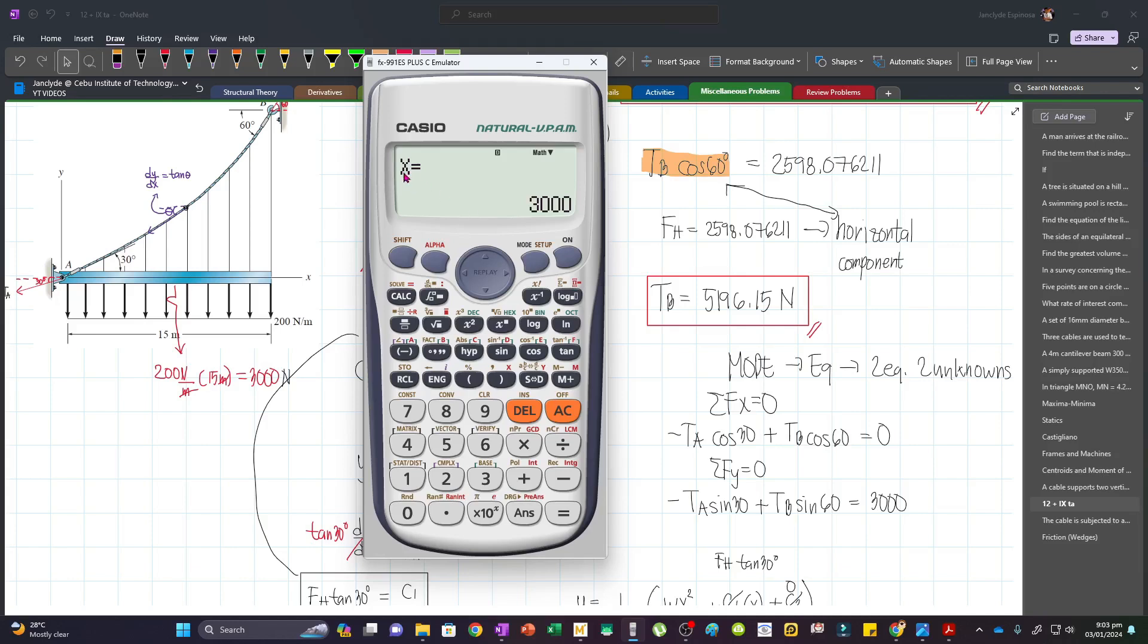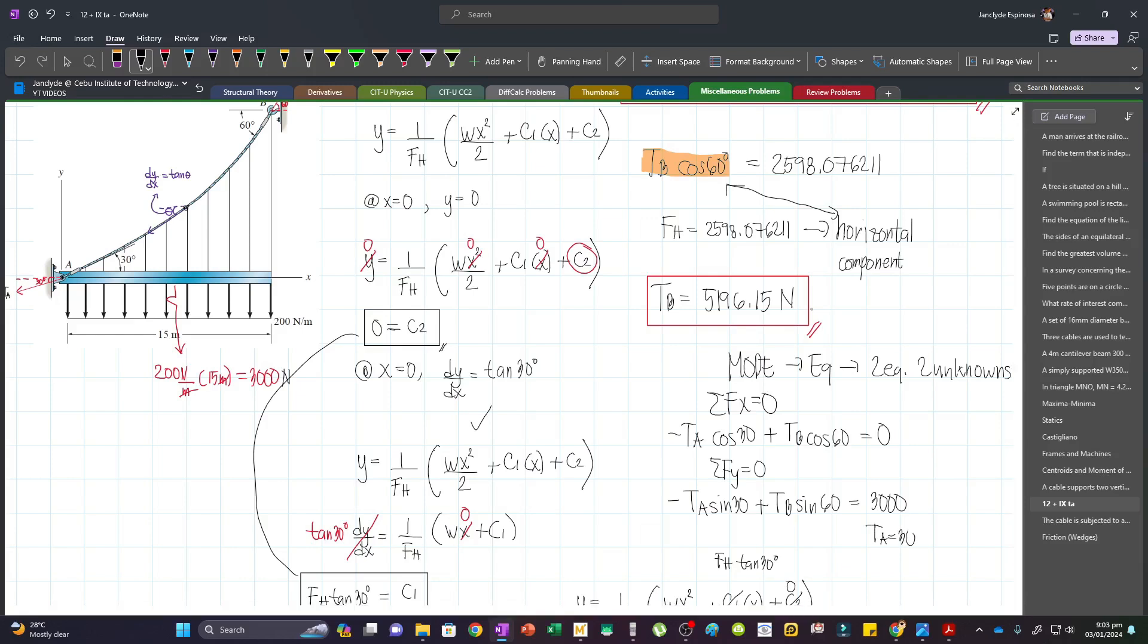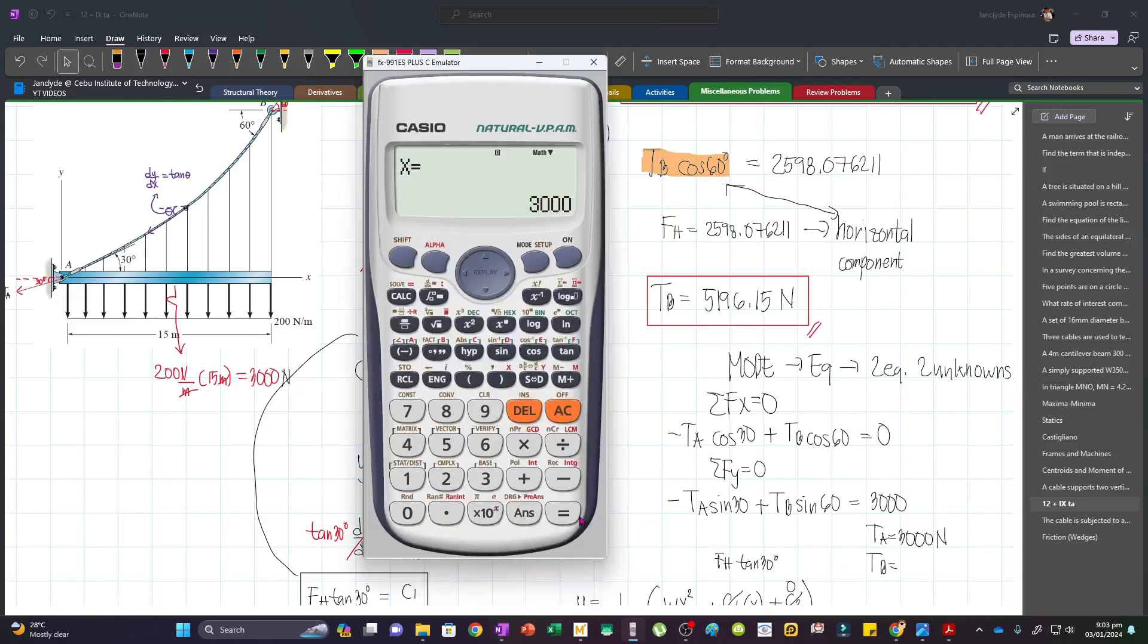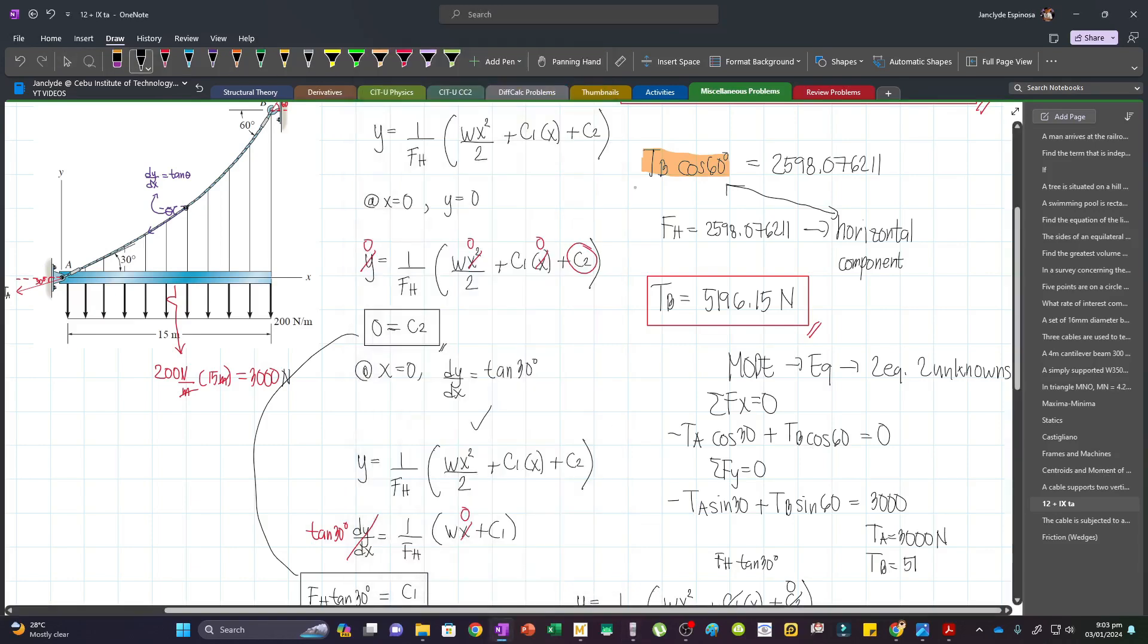Now this is the value of X, which corresponds to TA. So our TA will be 3000 newtons. And then our TB will be, press equals, we have 5196.15 newtons.